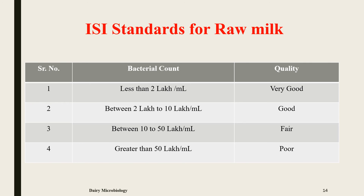Depending upon the number of organisms present in the sample, milk can be graded into four qualities. If the count is less than 2 lakh per ml, the milk is of very good quality. If between 2 lakh to 10 lakh per ml, it is good quality. If between 10 to 50 lakh per ml, it is fair quality. And if greater than 50 lakh organisms per ml, the quality is poor.